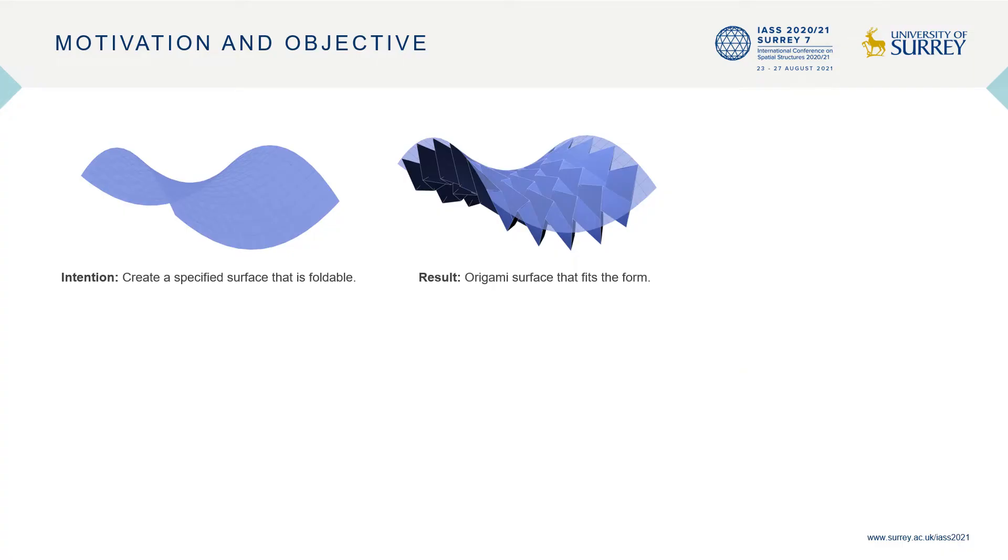We are interested in creating foldable surfaces that could have applications in architecture and as deployable structures. For example, one could aim for a target surface that looks like a saddle shape shown here. The objective is to design an origami structure that conforms to this target surface at some folded state.